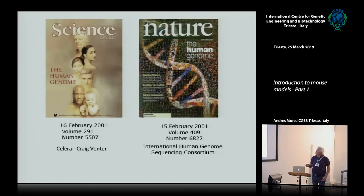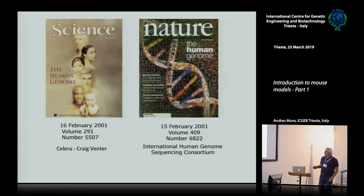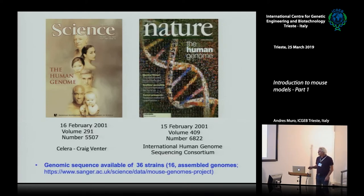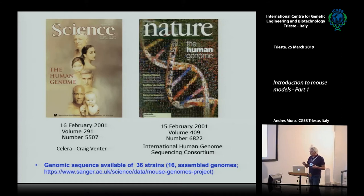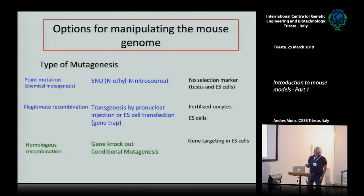A breakthrough in science was the sequencing of the human genome, which happened in 2001 by two different approaches: one by Celera from Craig Venter (a company), and one by the International Human Genome Consortium. We now have the genomes of many different strains and species sequenced, allowing us to better understand gene function and the consequences of mutations present in those genes.